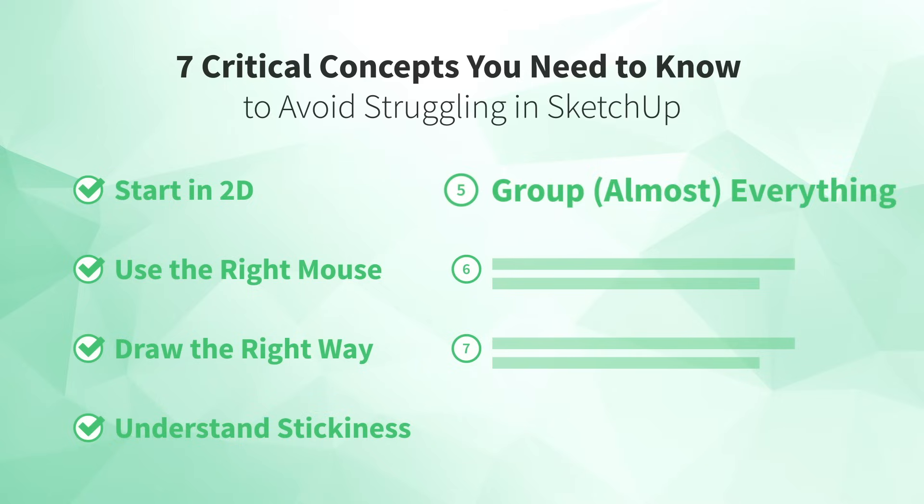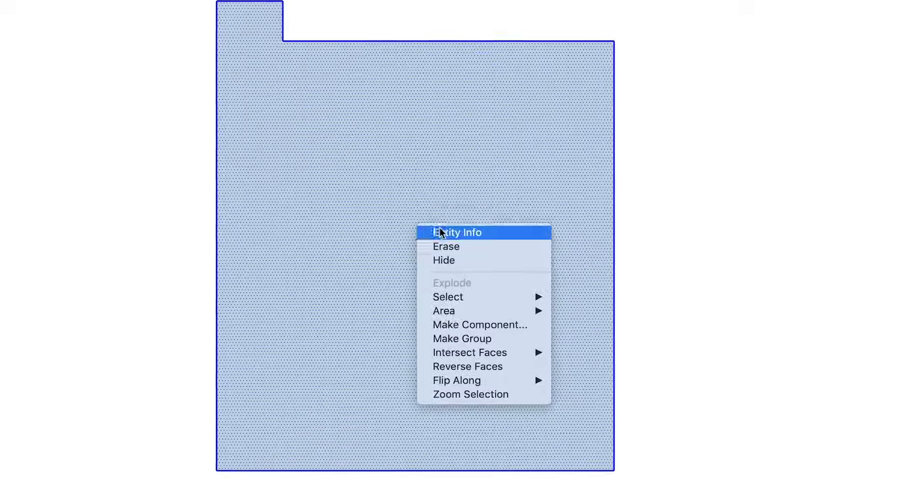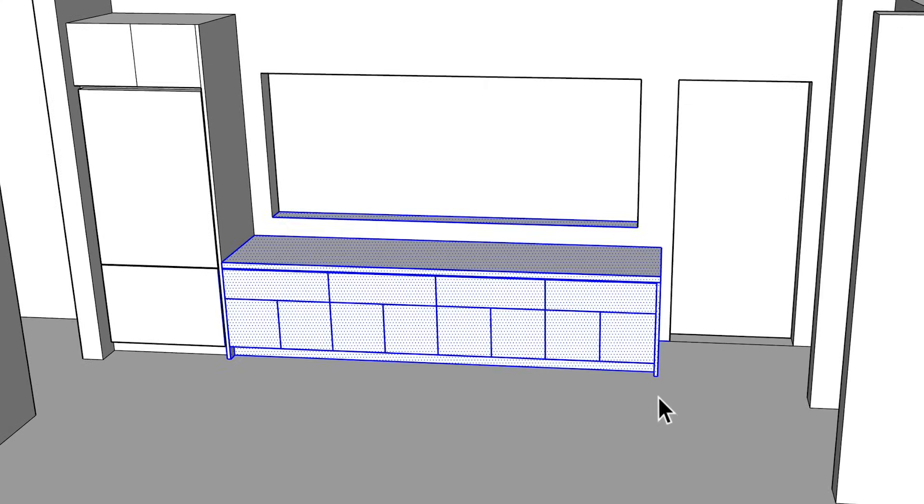Number five, group almost everything. For things that shouldn't get stuck, you can protect them from other geometry by first turning them into a group. Group geometry can't stick to anything else. This is by far the biggest problem self-taught users run into. They model away without groups and then end up with an uneditable mess. So group early and group often. Your future self will thank you. Now just because you're able to avoid the stickiness trap, it doesn't mean you're out of the woods just yet. Because there's an even more frustrating set of problems you're about to face. But you can avoid them with the next tip.